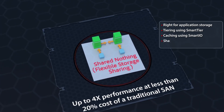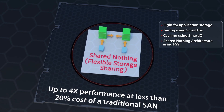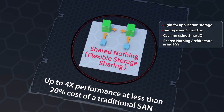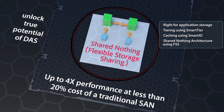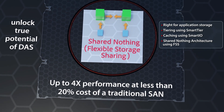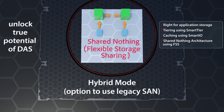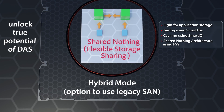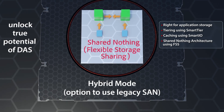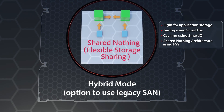Flexible storage sharing is a share-nothing architecture which allows customers to unlock the true potential of direct-attached storage without sacrificing performance or availability. FSS can also be deployed in a hybrid mode, allowing you to gain performance via in-host storage and still use your existing legacy SAN infrastructure.